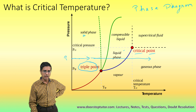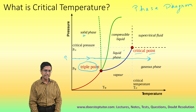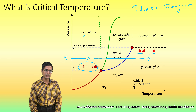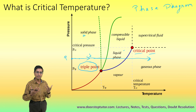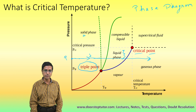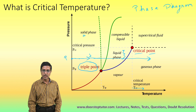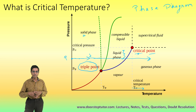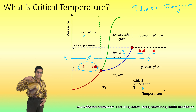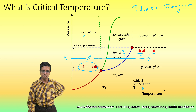Let us understand what happens if we increase the temperature - how do the phases of the substance change? At the same pressure, the substance would first exist only in the solid phase; for example, we will only have ice. As we increase the temperature, the ice would change to liquid water. As we increase the temperature further, the liquid water would convert into water vapor, the gaseous phase.